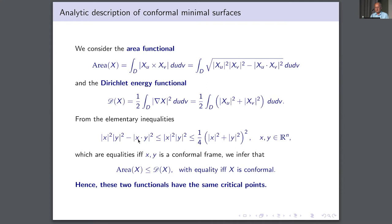Therefore, the area of X is less than or equal to the Dirichlet energy, with equality if and only if X is conformal. From this we conclude that the two functionals — area and Dirichlet energy — restricted to conformally parameterized surfaces have exactly the same critical points. If you have a critical point of the Dirichlet energy, and equality holds here, then it is also a critical point of the area, and vice versa. The critical points of the area functional are minimal surfaces.